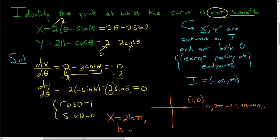Here, k is an integer. That's the final answer. If you're given a problem like this asking where it's not smooth, just take the derivatives, set them equal to 0, and solve the system of equations. I hope this helps.